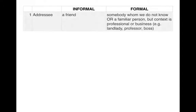For the first part — the addressee — the letters differ because a friend warrants an informal letter, whereas somebody you don't know or are not familiar with warrants a formal one. It's important that students are able to distinguish the two kinds of letters, because eventually when they start and end the letter, the greetings and expressions will be very different.